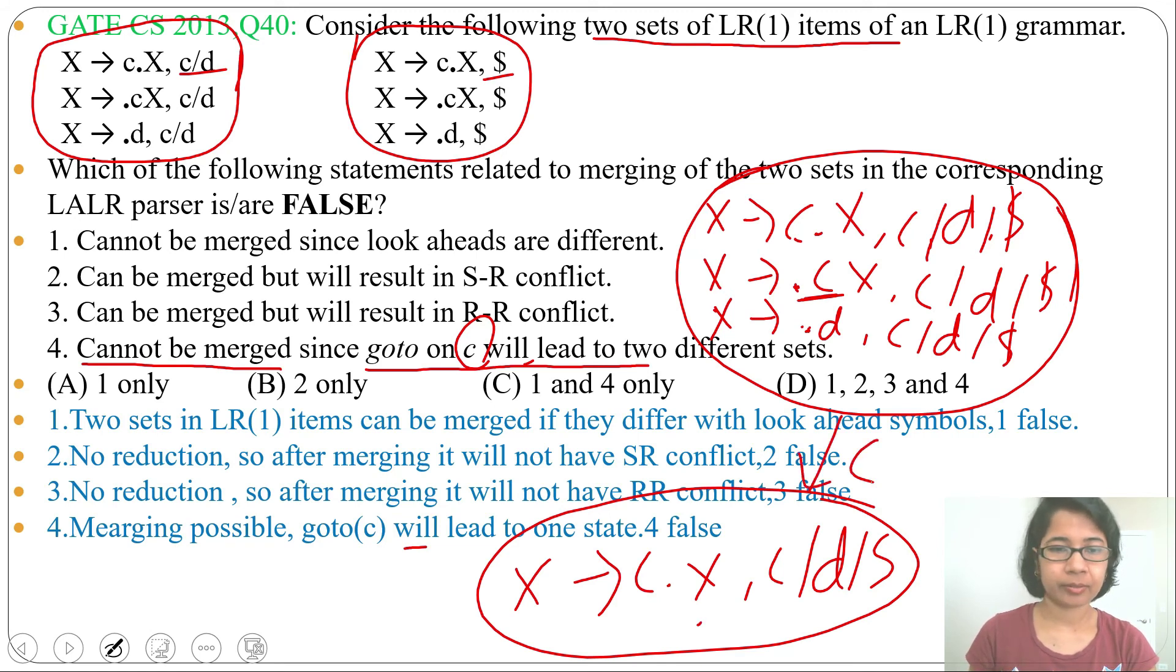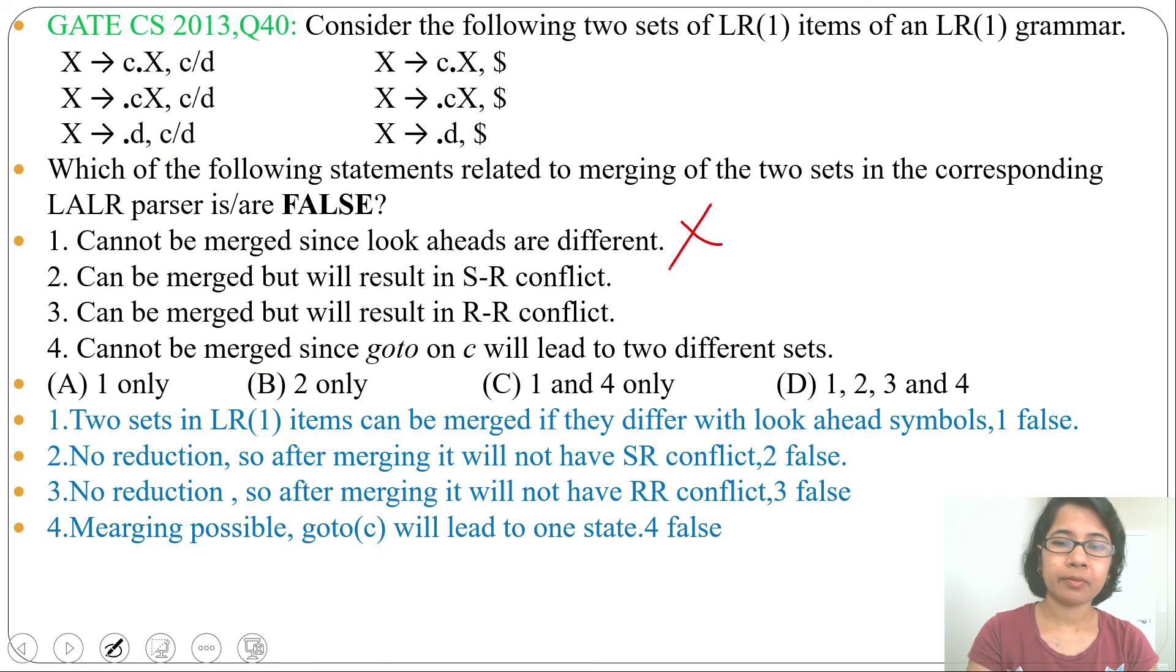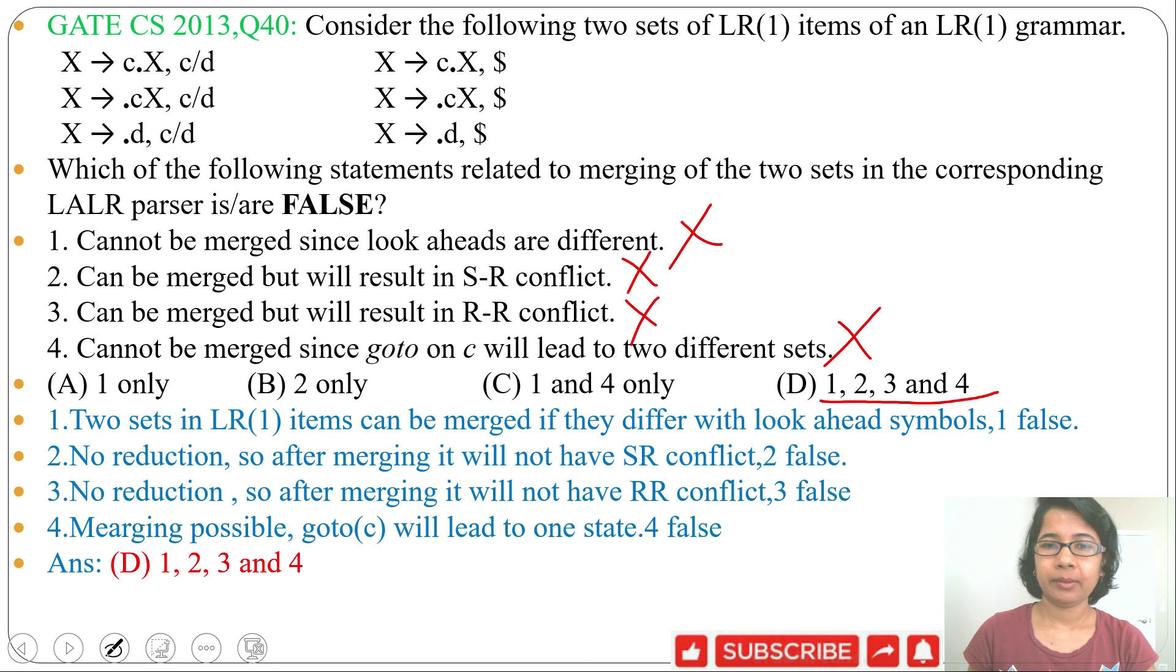So this is false. We found statement 1 is false, statement 2 is false, statement 3 is false, statement 4 is false. Now just check which option says this: in option D, 1, 2, 3, and 4 are all false. So the answer will be option D: 1, 2, 3, and 4. If this lecture is helpful for you, please like and subscribe. Thank you.